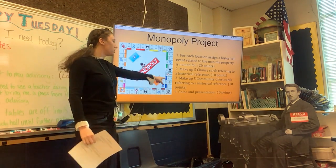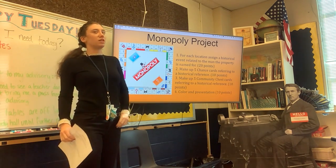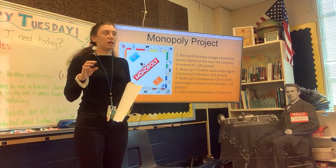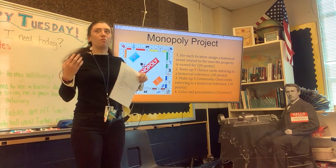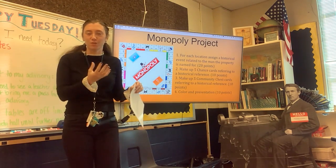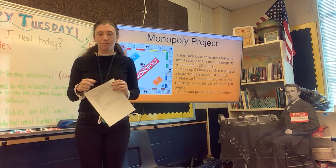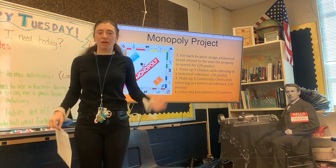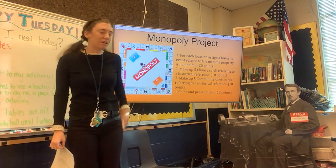Same with community chest cards — for those, the events are going to be good things. So it could be something like: Andrew Carnegie had elephants walk across his bridge to show how sturdy it was. You could put 'elephants made it across the bridge, move forward five spaces,' or something like that.